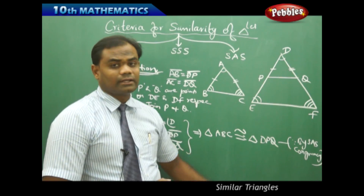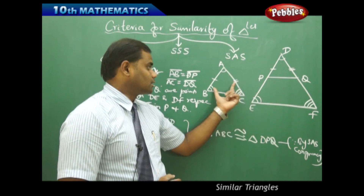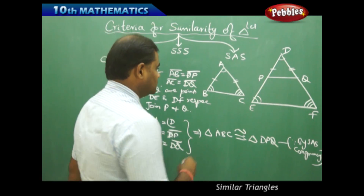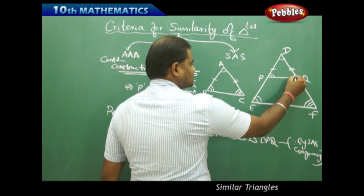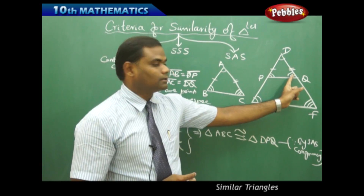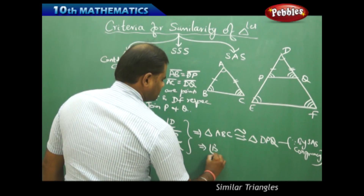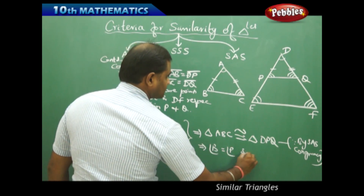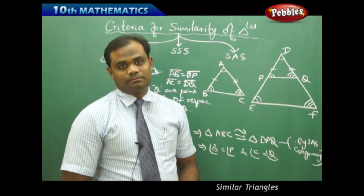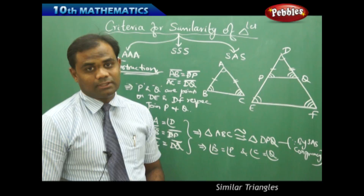When two triangles are congruent, their corresponding angles and corresponding sides are the same. Therefore angle B equals angle P and angle C equals angle Q. Because these two triangles are congruent, corresponding angles are respectively equal.